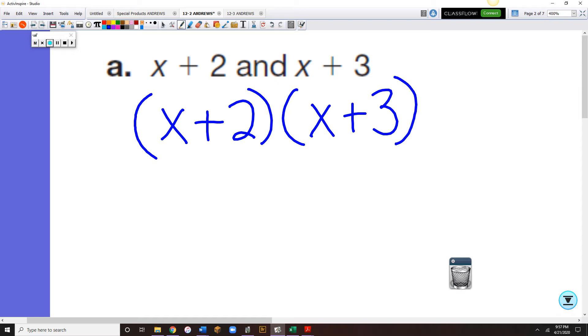And what double distribute means is I'm going to start with the x. And I'm going to pretend that's all I'm distributing. So x times x, and x times a plus 3. Well, x times x is x squared. And x times a plus 3 would be a plus 3x.